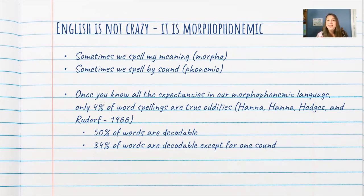All right, so English, some people say English is crazy. It's totally not crazy. English is what we call morphophonemic. Sometimes we spell by meaning, morpho. Sometimes we spell by sound. That's where the phonemic part comes in. So once we know when we're spelling by meaning and when we're spelling by sound, that can explain a lot of what people consider to be those crazy parts of English. So Hannah, Hannah, Hodges and Ruddorf discovered this way back in 1966, when they figured out that 50% of words are decodable just with that phonemic part of language. But then you add in we have 34% of words are decodable for varying of one sound. And if you know all of those expectancies for morphophonemic parts of language, only 4% of word spellings are true oddities. Words like yacht. Why do we spell yacht Y-A-C-H-T? I don't know. That's just how it is.